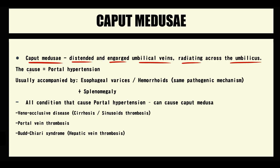Caput Medusae develops due to portal hypertension, and usually in patients with Caput Medusae we can also see esophageal varices and hemorrhoids, simply because they are all portosystemic shunts and thereby have the same pathogenic mechanism. Also, in patients with Caput Medusae, most likely we can determine splenomegaly.